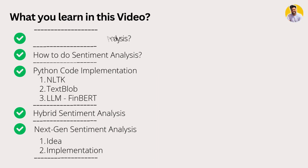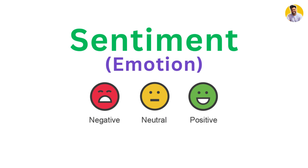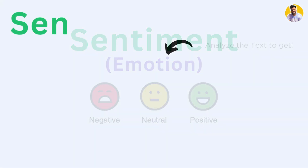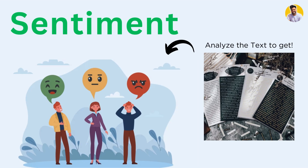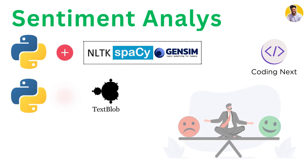So what is sentiment? It is an emotion that can be expressed as positive, negative, or neutral. Whenever you process text data in the form of audio, video, or text, you analyze it and predict the sentiment based on the words. For example: 'I got failed in a test' is negative; 'The test is done' is neutral; and 'I got 99 out of 100' is very positive.